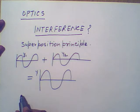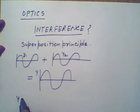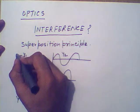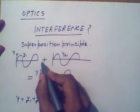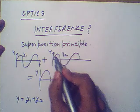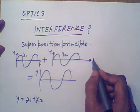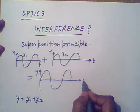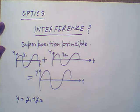In this situation, if the displacement of the first wave is y1 and the displacement of the second wave is y2, then the resultant displacement Y will be equal to y1 plus y2. This is the algebraic sum of the displacements along the Y-axis.